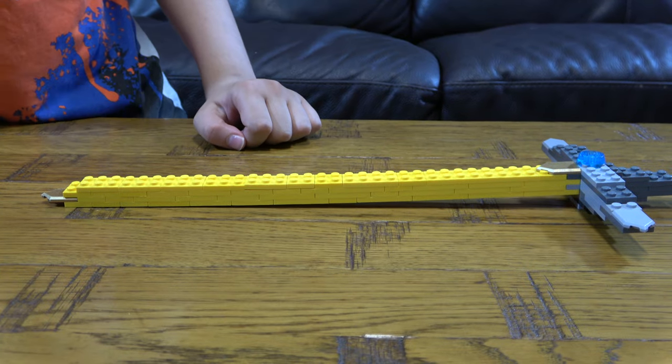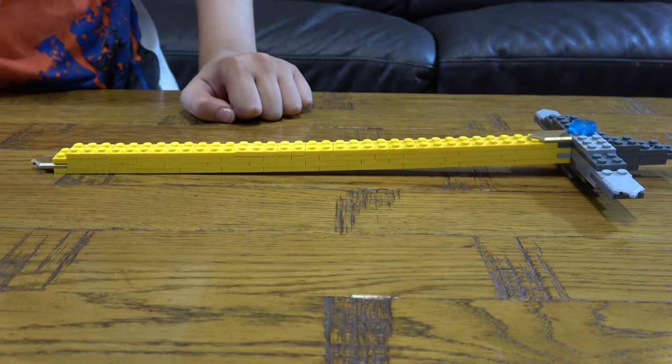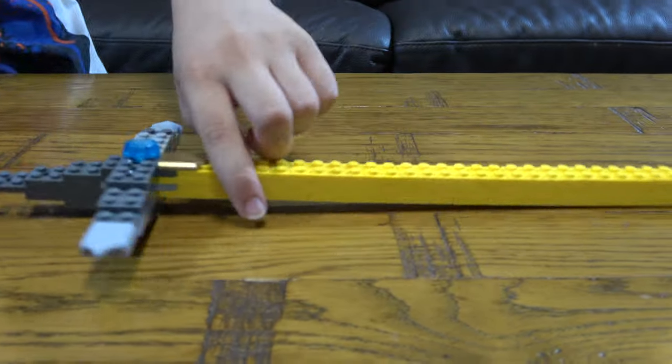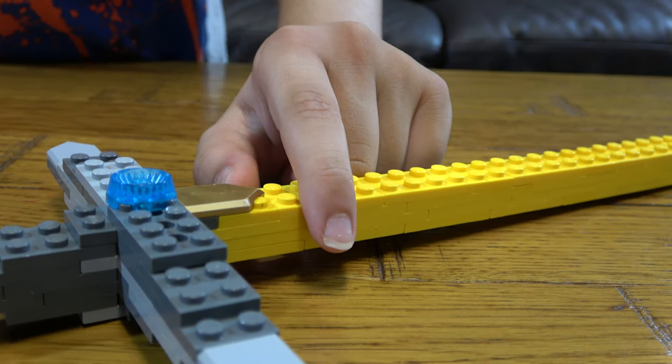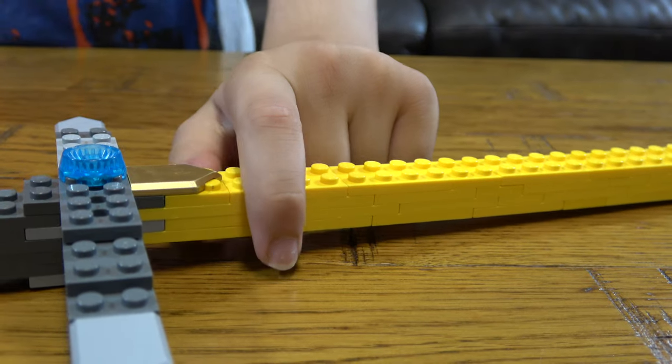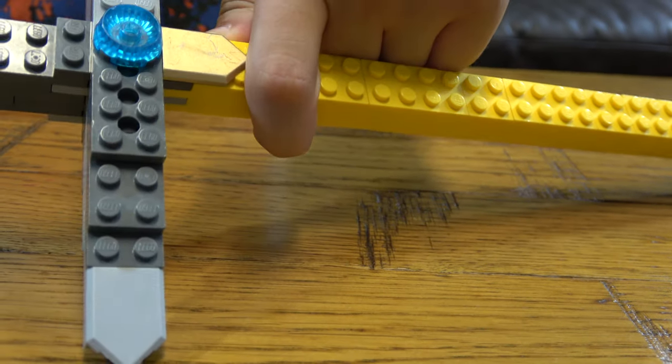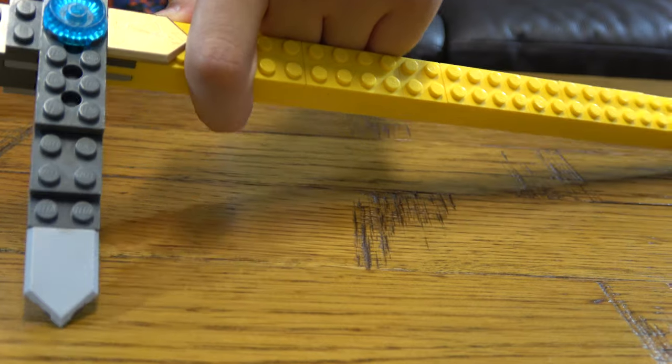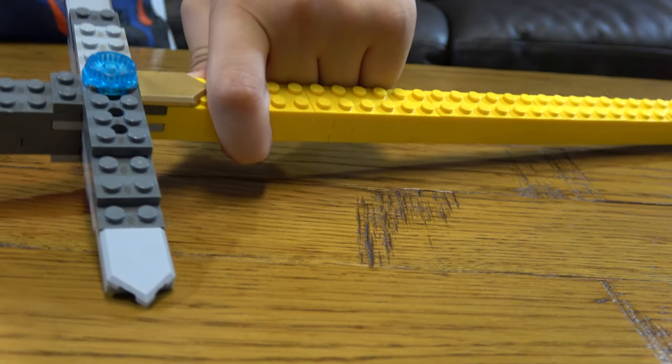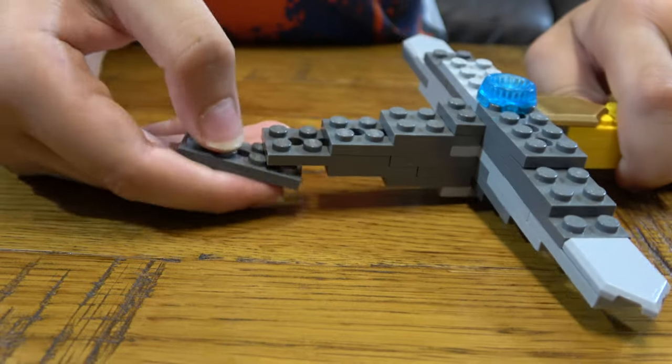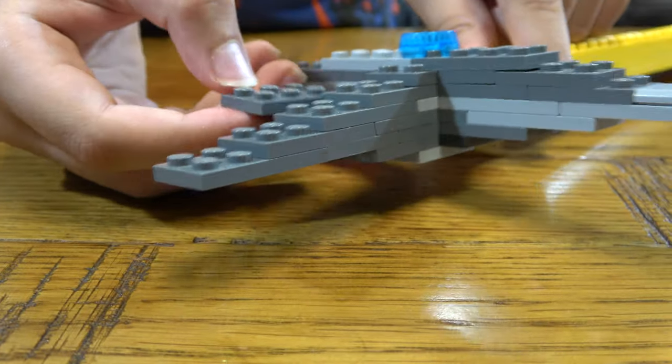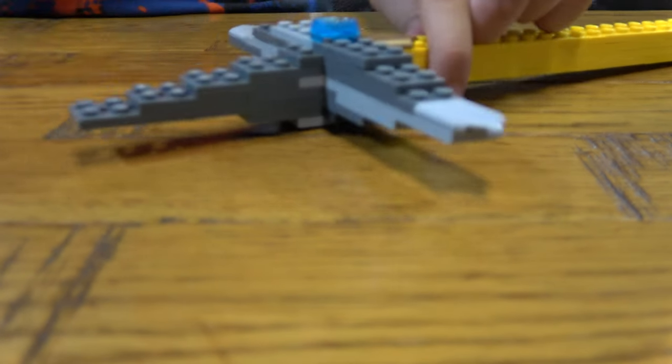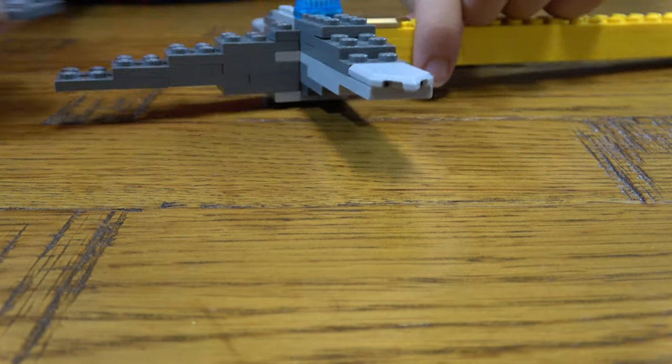Now that is the blade. Now for the last bit and the smallest bit, is the handle. So the handle is attached to here. You place this here. Place. And then next you place this here.